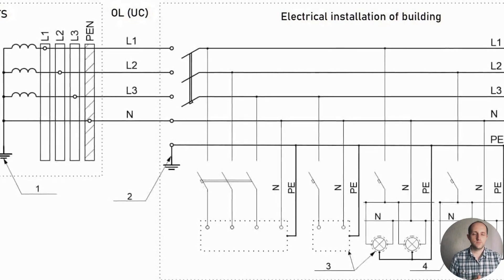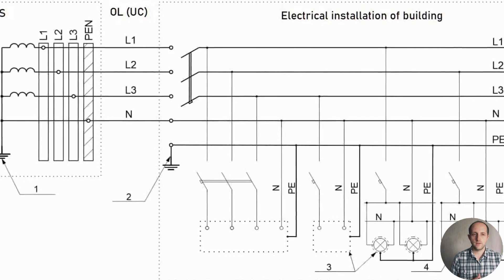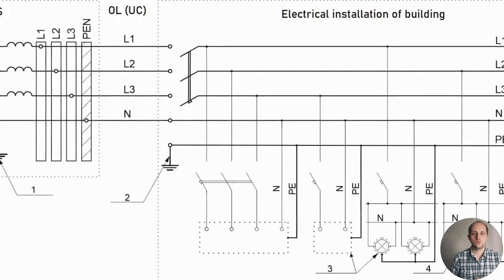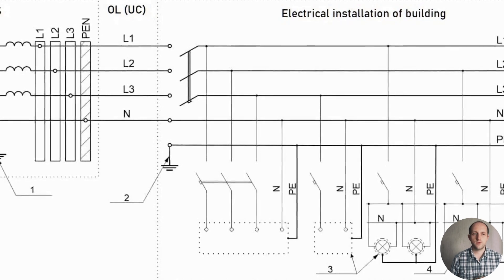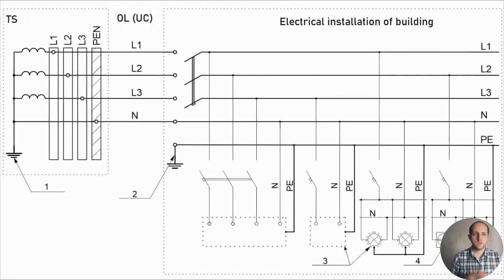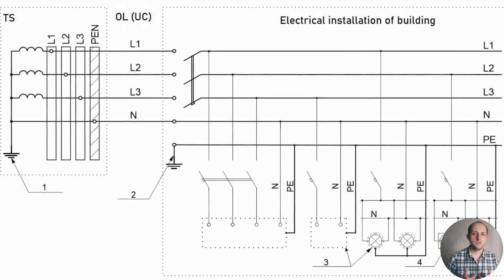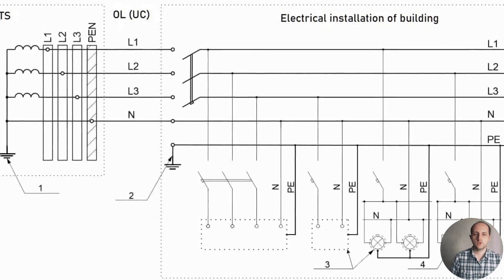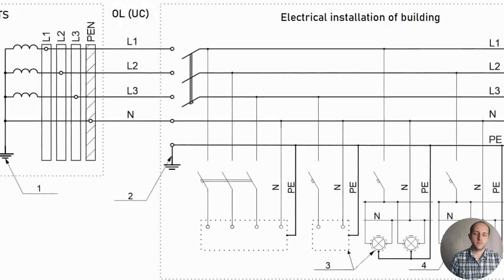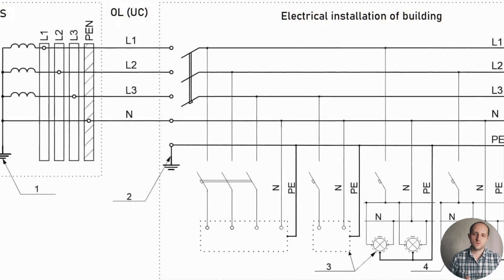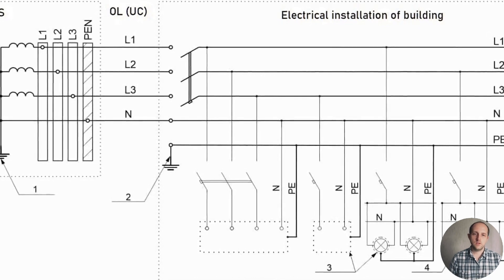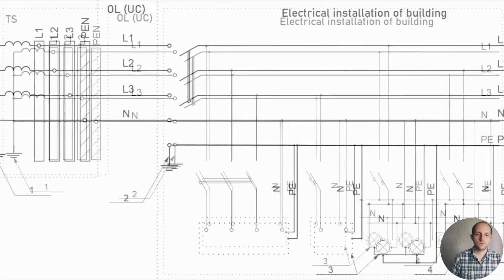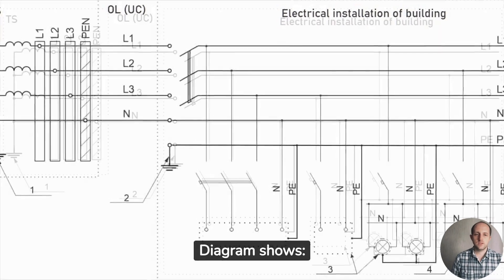Electrically independent earth electrodes are not possible if the transformer substation is integrated into the building, which is why TN-S and TN-CS systems are used in cities. The TT earthing system has low earth fault currents compared to TN-S, TN-CS, and TN-C systems. Therefore, automatic disconnection of supply in TT installations can only be realized by means of residual current devices (RCDs).